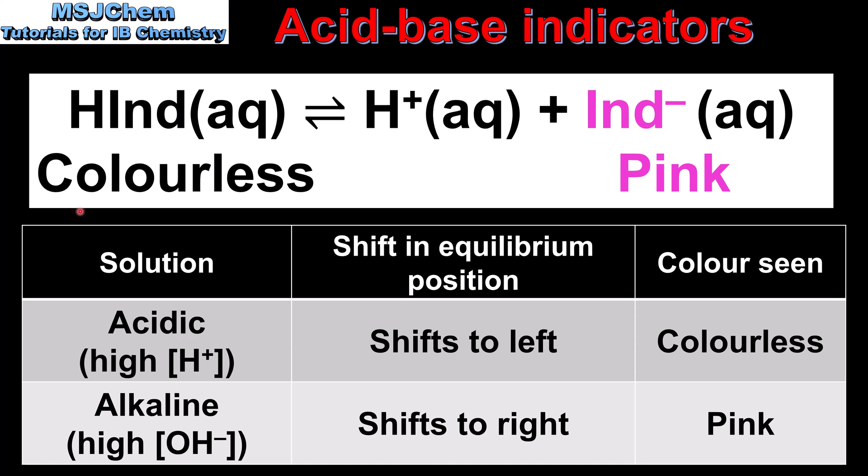To explain how an Acid Base Indicator works, we'll apply Le Chatelier's principle, which can be used to predict in which direction the equilibrium position will shift when changes are made to a system at equilibrium. Because we have an equilibrium existing between the unionized form of the weak acid and the ionized form, we can use this principle to explain which color will be seen in an acidic or alkaline solution.